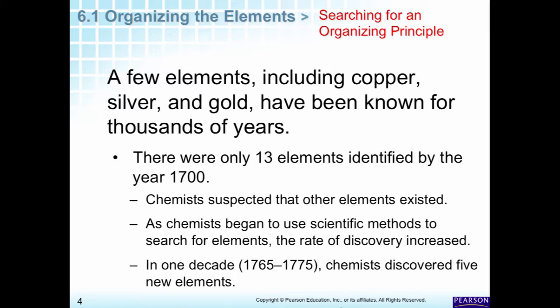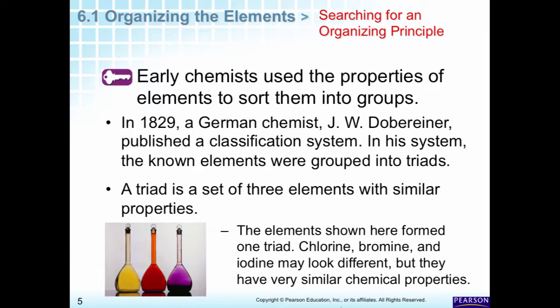Towards the end of the 18th century, chemists started discovering other elements, so it was time to organize them. In the early 1800s, there was a German chemist — Germany was very famous for its chemistry, probably the birthplace of a lot of modern chemistry. A gentleman named Döbereiner came up with a classification system based on three elements that had similar properties, and he called these groups triads because that meant three.